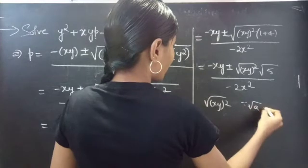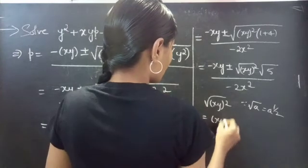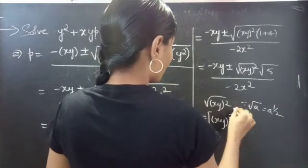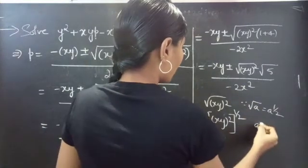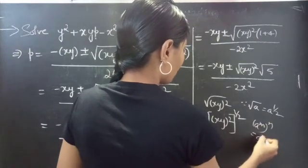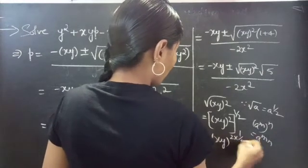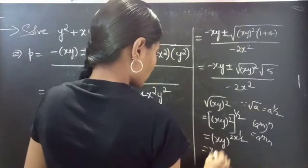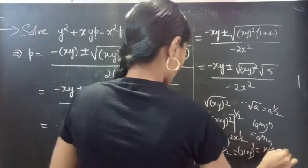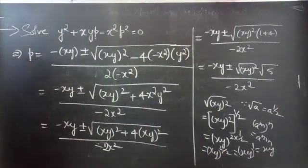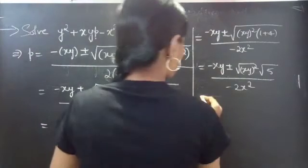Since square root of a can be written as a to the power 1/2, square root of (xy) squared equals (xy squared) to the power 1/2, which equals xy to the power 2 times 1/2, equals xy to the power 1, which equals xy. So the square root of (xy) squared is simply xy.